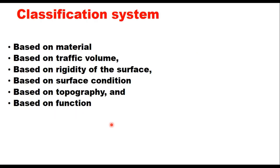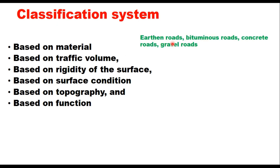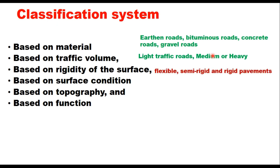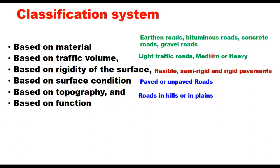Roads can be classified either based on material, based on traffic volume, based on rigidity of the surface, surface condition, topography, and based on function. Based on materials, roads can be earthen, bituminous, concrete, or gravel roads. Based on traffic volume, they can be light, medium, or heavy traffic roads. Based on rigidity, roads can be flexible, semi-flexible or semi-rigid, and rigid pavements. Based on surface condition, roads are either paved or unpaved, and based on topography, roads can be in hilly areas or in plains.